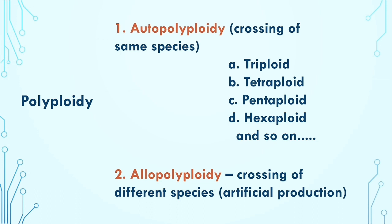Autopolyploidy can be of various types: triploid, tetraploid, pentaploid, and so on. In case of allopolyploidy there can also be these types — triploid, tetraploid, pentaploid — but the basic difference is the difference in species. Allopolyploidy is mainly used for artificial production of plants and is often used in agricultural purposes for higher production of crops.